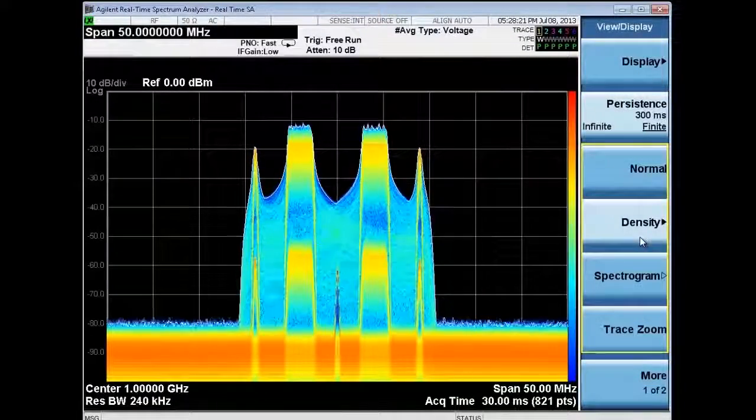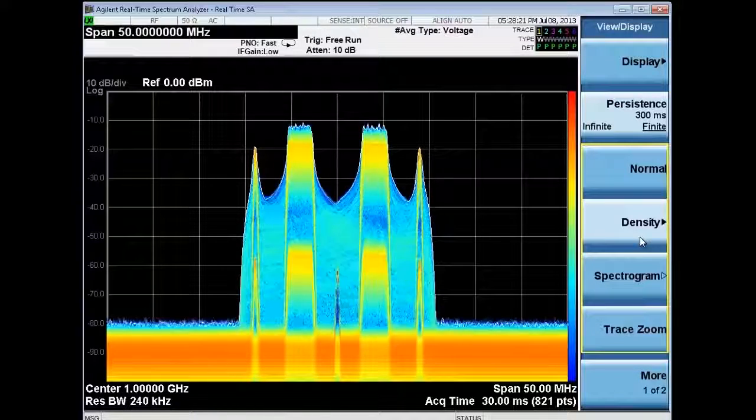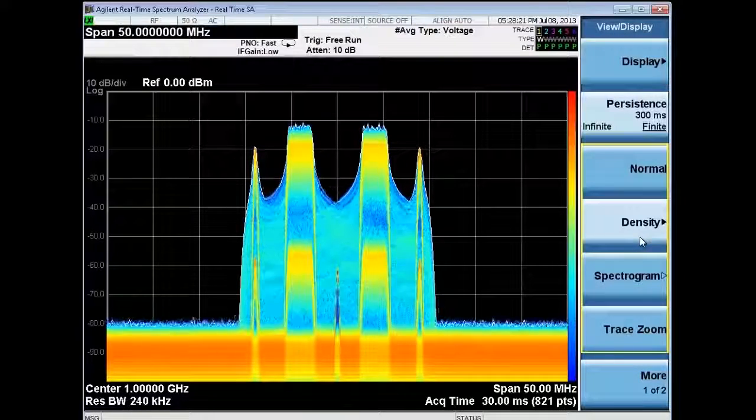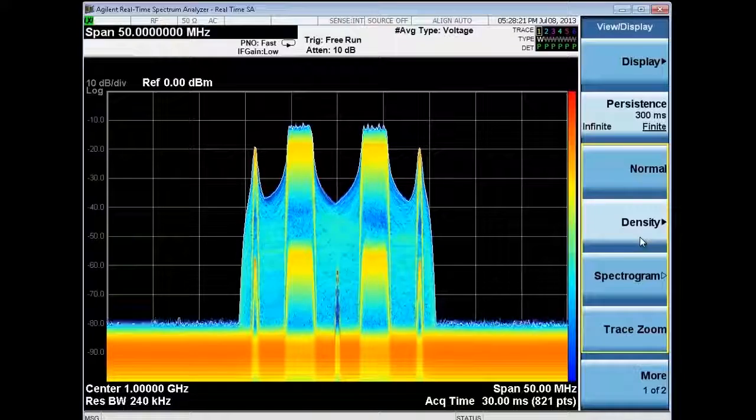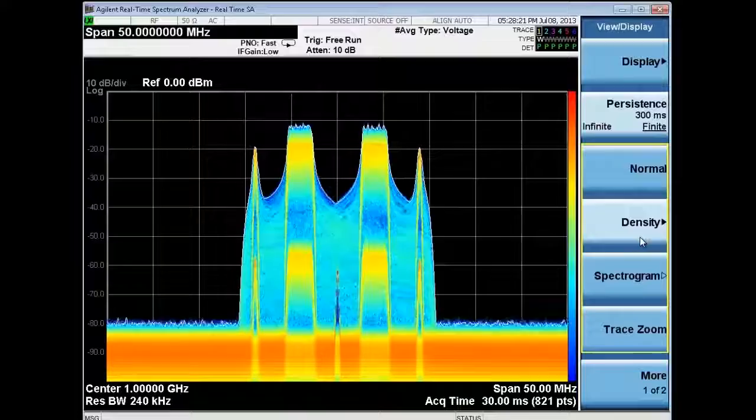The density display uses color coding to show you how frequently a signal is on or off. In this case, how frequently a signal hops around. The display can help you easily identify even the toughest intermittent spurious activity, or even identify interference.